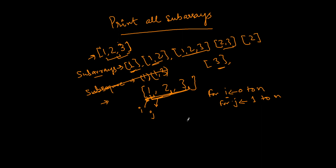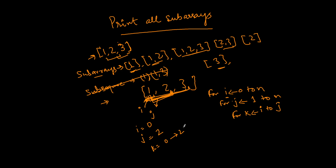The maximum sub-array size can be the full array size. The size is j, and then in a third inner loop — k = i to j — we iterate and print all the elements. So once we fix the starting point i and the group size j, we iterate k from i to j and print all the elements of that sub-array.